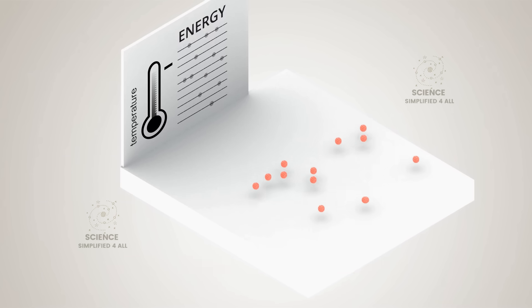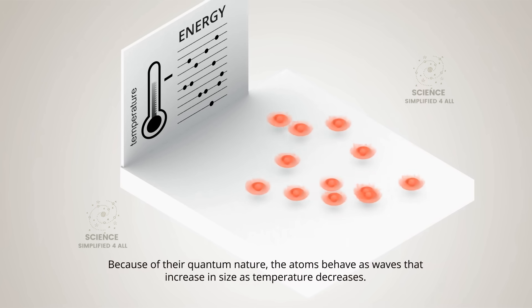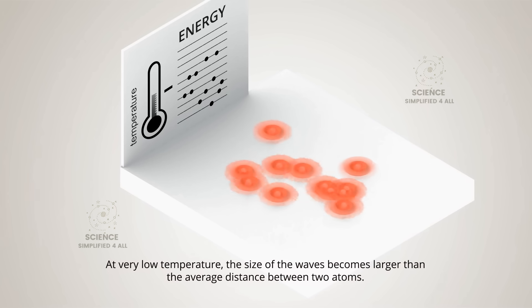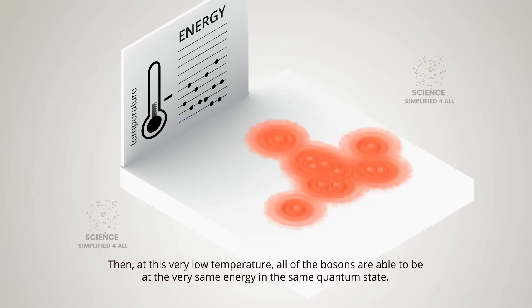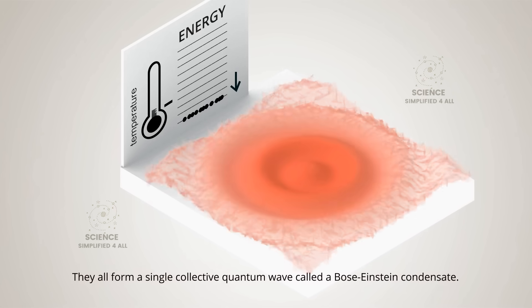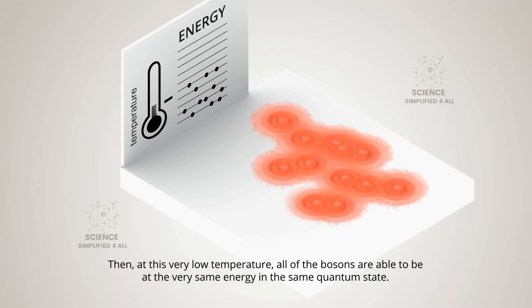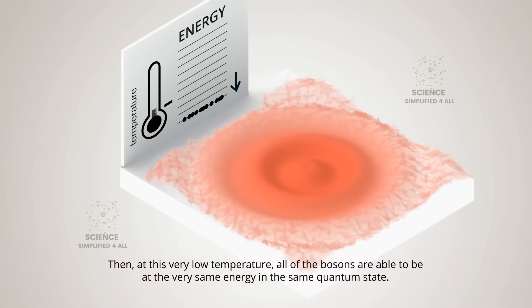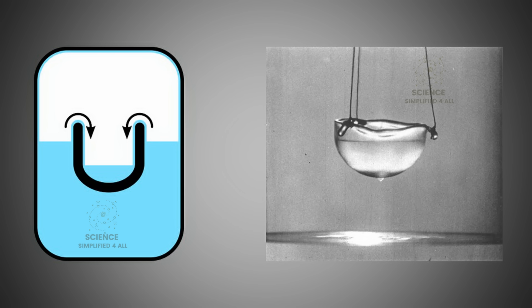Now, the special property of bosons is that when they are cooled to extremely low temperatures, they can enter a new state of matter known as the Bose-Einstein condensate, often called the fifth state of matter. For instance, when liquid helium is cooled to around minus 271 degrees Celsius, its atoms all settle into the same lowest energy state. At that point, all the atoms share one common quantum state and they no longer behave as separate particles. Instead, they act collectively as a single quantum entity. In this condition, helium exhibits a property known as superfluidity. It can even climb up the walls of its container and flow out without any friction. This is the most common and fascinating example used to explain what a Bose-Einstein condensate is.